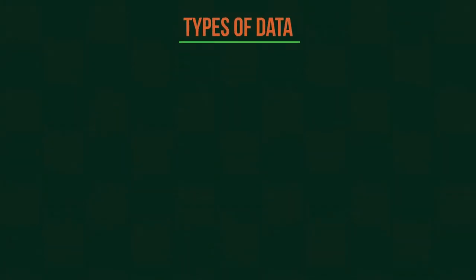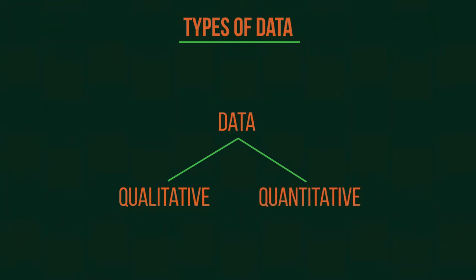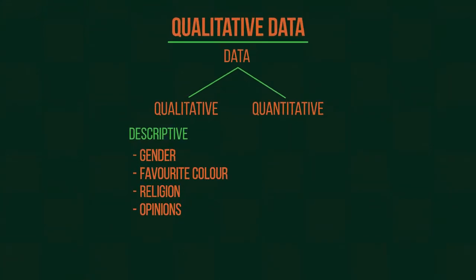Now, for types of data. Data can be qualitative or quantitative. Things like gender, favourite colour, religion, opinions, anything that is non-numerical is qualitative. It's descriptive information.